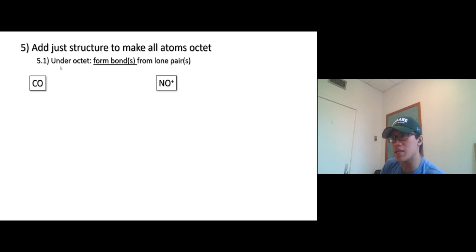In the case of adjusting structure, you will see two scenarios. One, an atom is under octet, so we don't have enough electrons for this particular atom. In this case, we will form bonds from the lone pair. Let's take a look.